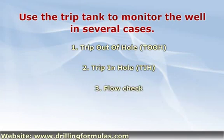Second: Trip in hole. While tripping in hole, the drill string — bit, BHA, and drill pipe — is run back in the hole. The TripTank must be used to keep track of the volume gain. The expected volume gain should be equal to the displacement volume of the drill string.